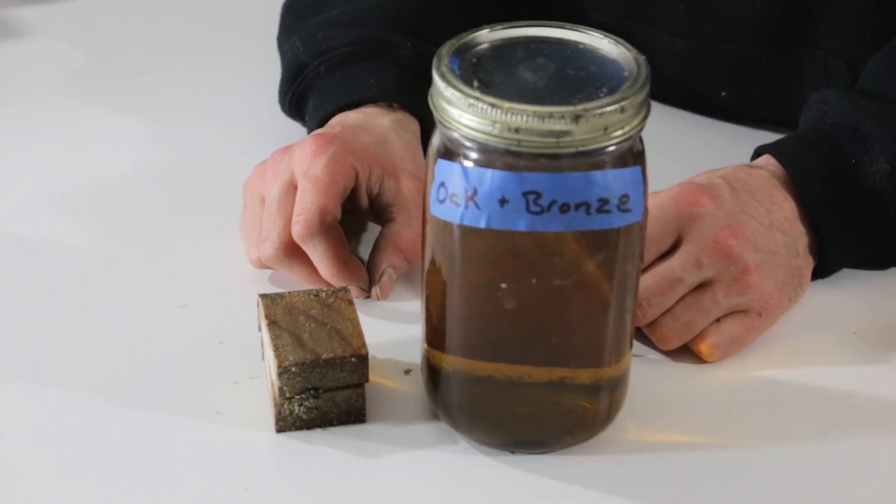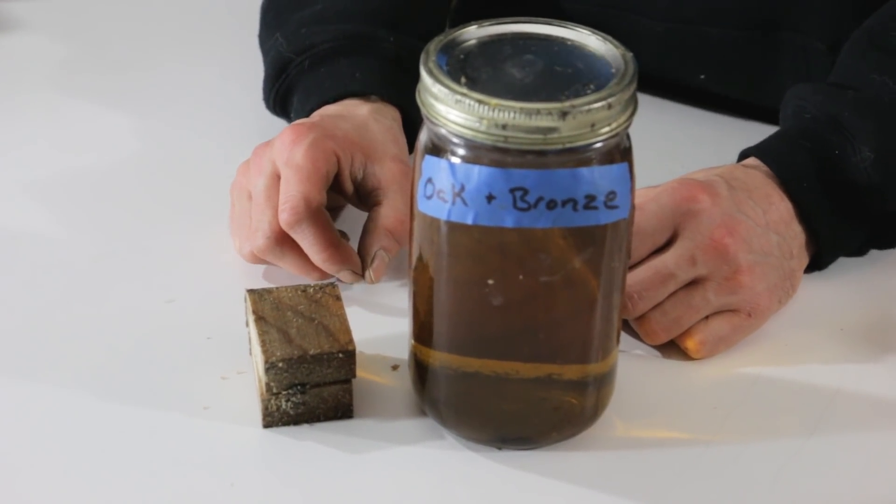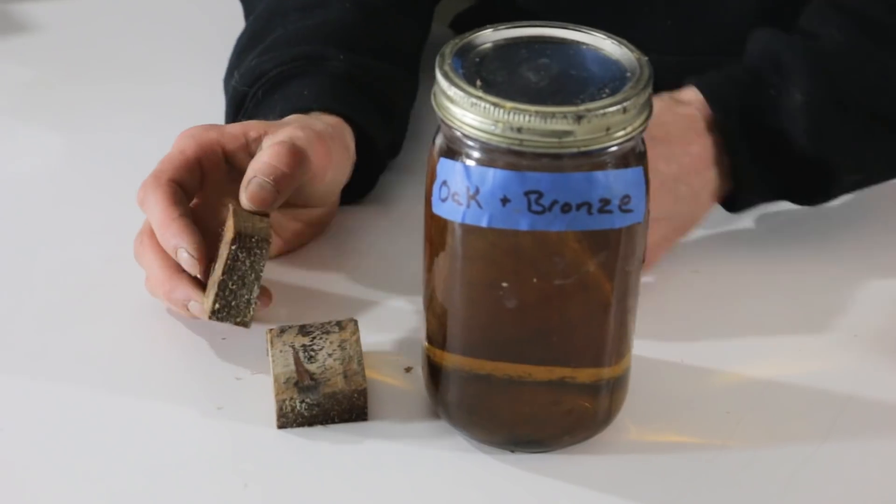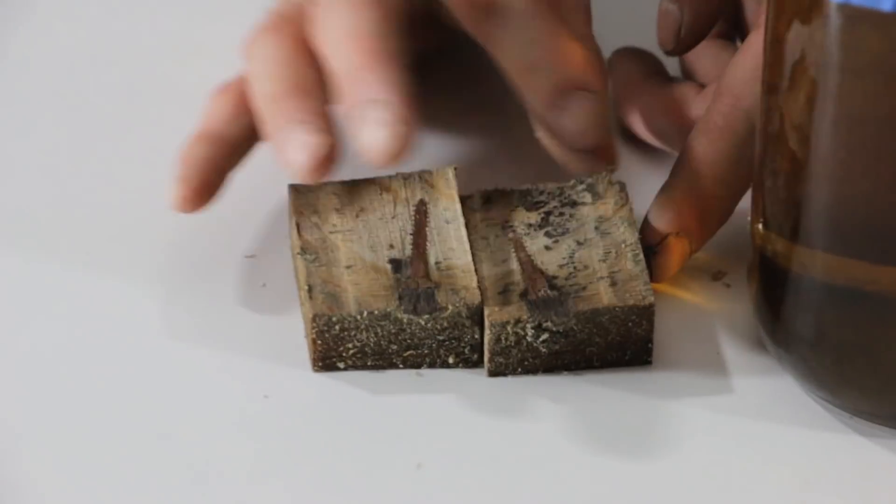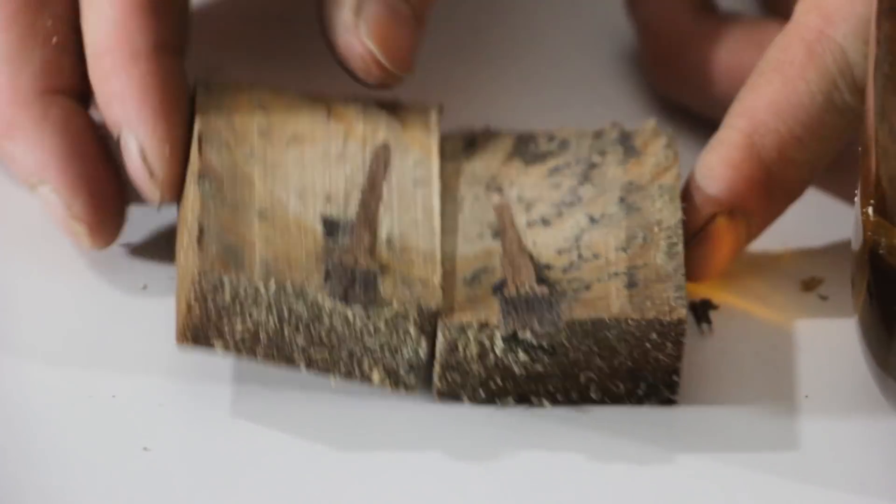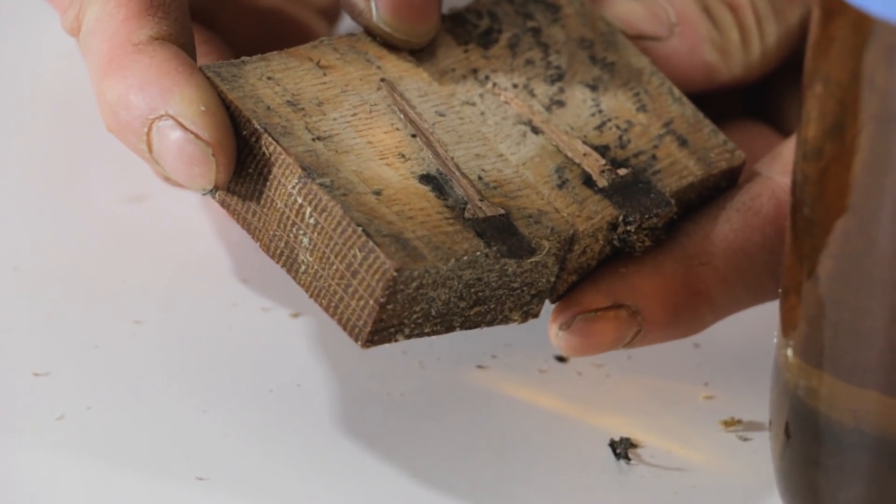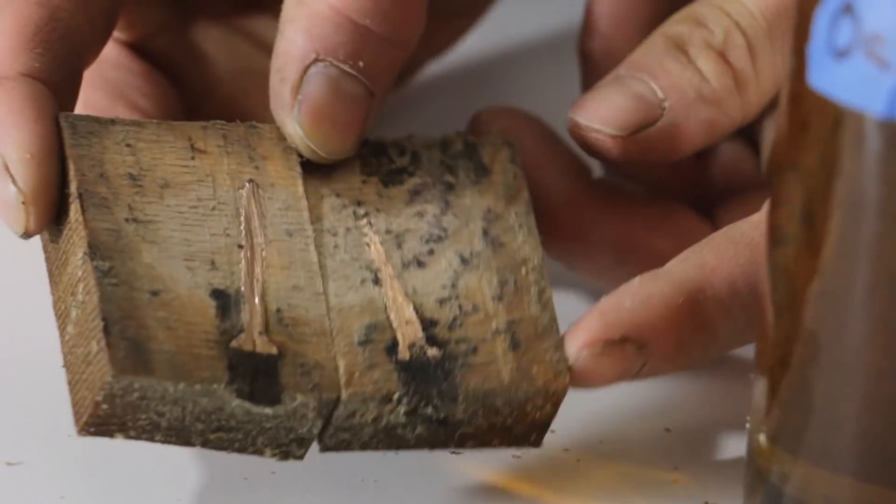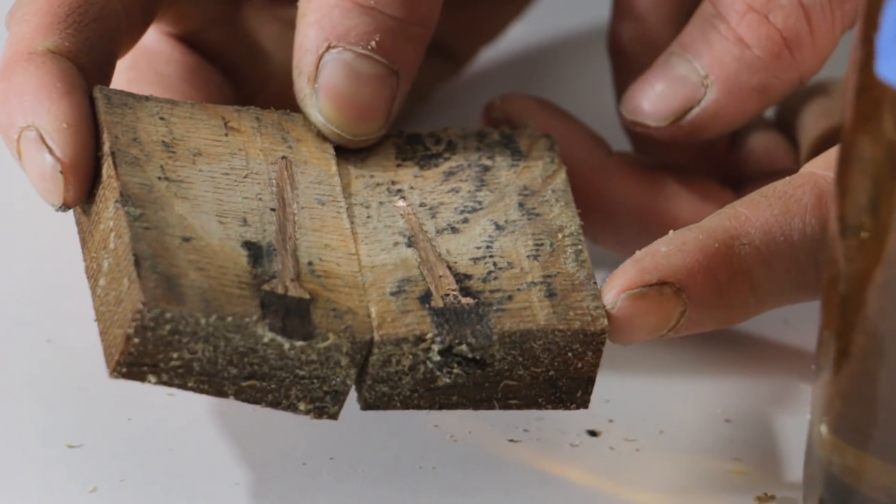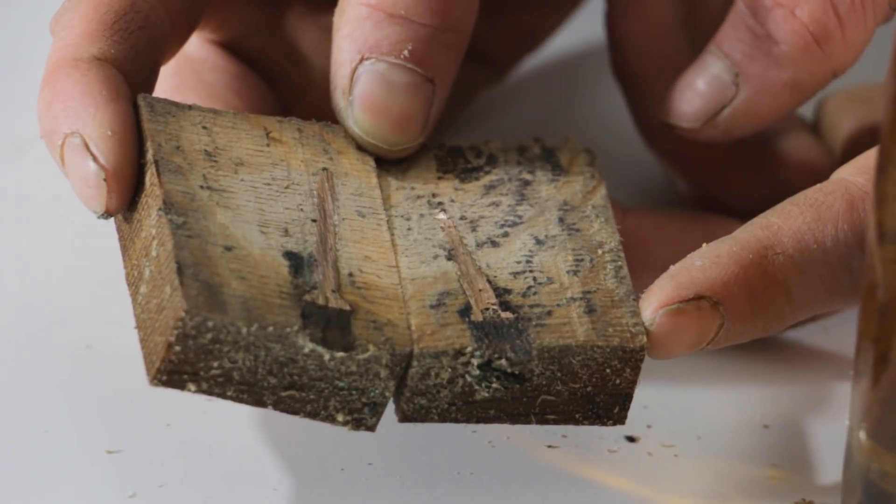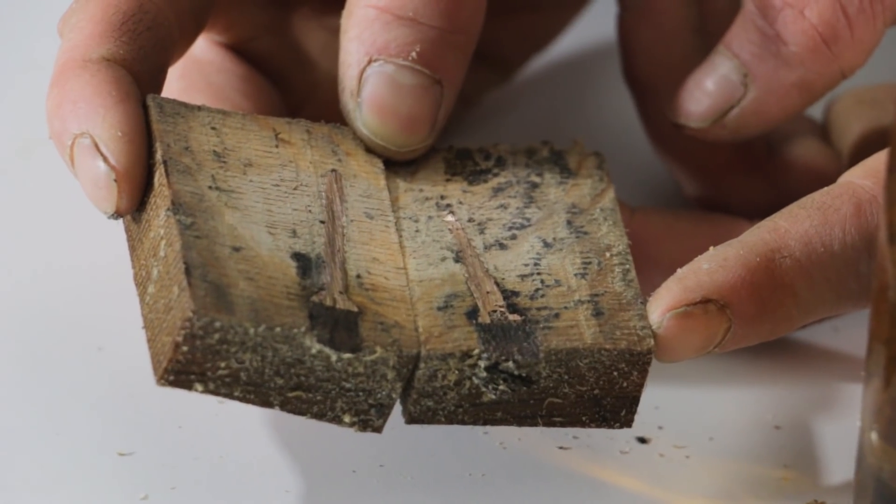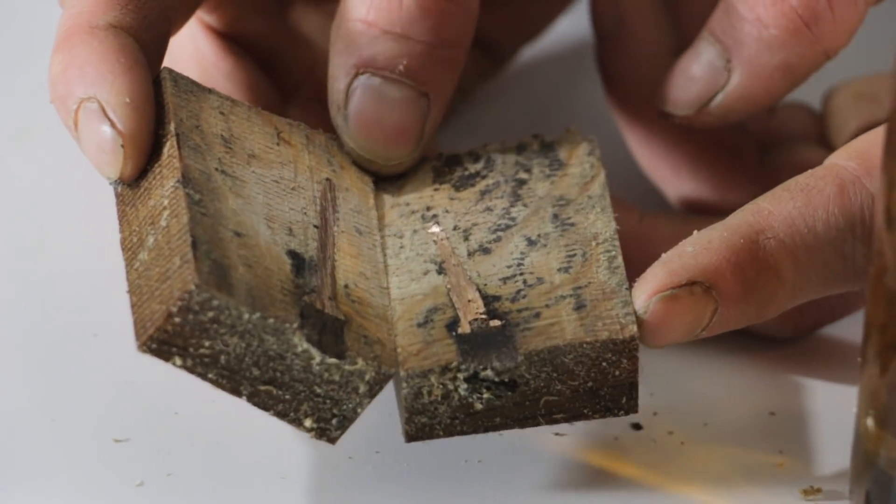And here we have oak and bronze, which is what our backbone is basically going to be put together with. And same deal, we can see a little bit of corrosion from the bandsaw blade there. But that bronze is perfectly shiny and you don't see any corrosion around it, which is great. And that's what we would expect, honestly, from the bronze and the oak if you were to cut it open 80 years from now, to our understanding. They behave really well together.